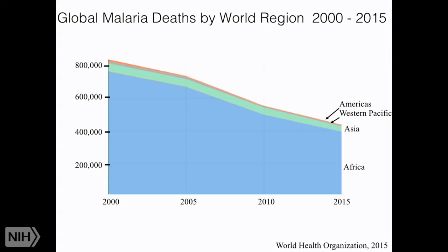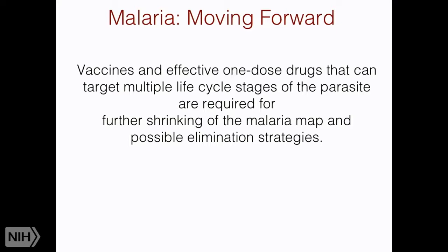What do we need to move forward? We need vaccines and we need effective one-dose drugs that can target multiple life cycle stages of the parasite. I'm going to talk a little bit about the transmission stage of the sporozoites and illustrate that it is a bottleneck. Then I'll follow with a discussion on where we are with vaccines attacking these bottlenecks — because it makes sense that if you have a bottleneck, that may be a good place to target the organism.